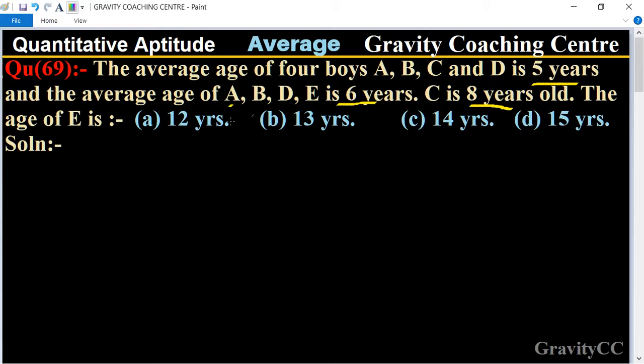The average age of four boys given five years, so the sum of age of four boys A plus B plus C plus D equal to their average is five, so five into four equal to twenty.